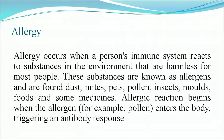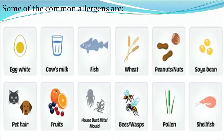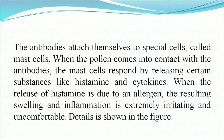Allergy occurs when a person's immune system reacts to substances in the environment that are harmless for most people. These substances are known as allergens and are found in dust, mites, pets, pollen, insects, molds, food, and some medicines. An allergic reaction begins when the allergen enters the body, triggering an antibody response. The antibodies attach themselves to special cells called mast cells. When the allergen comes into contact with the antibodies, the mast cells respond by releasing substances like histamines and cytokines, causing swelling and inflammation that is extremely irritating and uncomfortable.